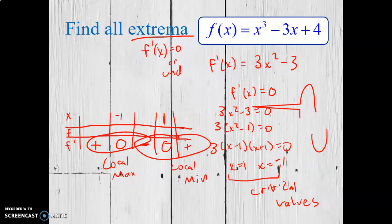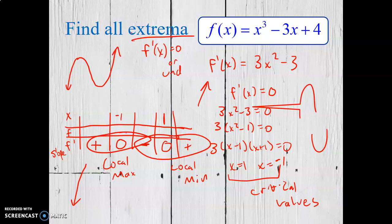Now I think about what the end behavior is like. The positive slope on the far left means an arrow pointing up on that side. Coming from the left with positive slope, I go up, flatten out, start decreasing, flatten out again, then start increasing. So the graph has a local max and a local min, but no absolute max or min because the graph goes forever. To find the local max and min values, I plug in x = 1 and x = −1 into the original function.